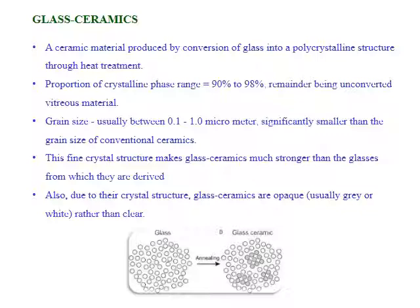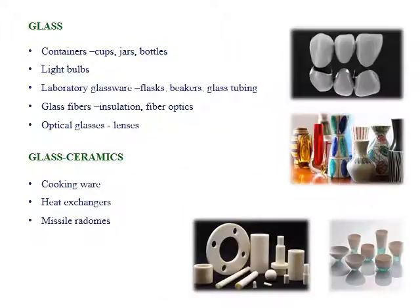Some materials showing a glassy look are called glass ceramics, which have an opaque nature compared to normal glass. Using traditional glass, we can produce containers, cups, jars, bottles, light bulbs, laboratory glassware such as flasks and beakers, glass tubing, glass fibers for insulation, fiber optics, and optical glasses for lens production. Glass ceramics, having higher strength than glass, are useful for producing cooking wares, heat exchangers, and missile radomes.